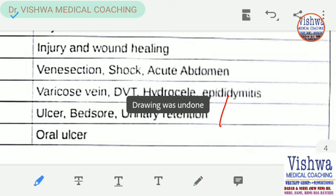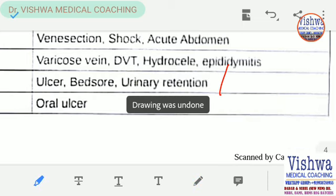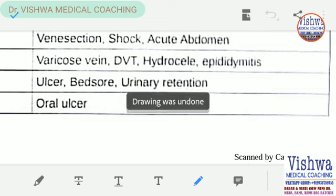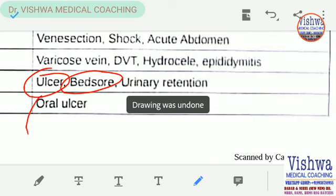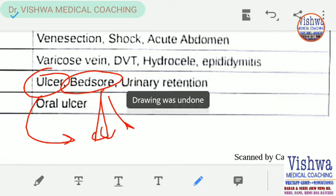Ulcers and bed sores are again very common short notes. Cover types of ulcers — varicose ulcers, undermined edges, punched-out lesions, and neuropathic ulcers. For bed sores, include types, precipitating factors, and common management such as prevention of infection and allowing healing.